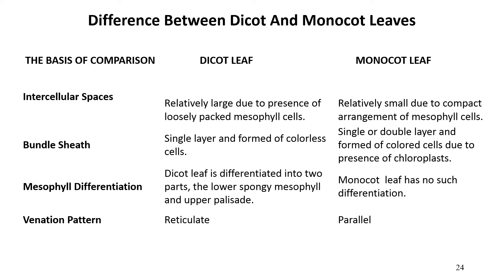The bundle sheath of dicot plant leaves generally has a single layer formed of colorless cells. The bundle sheath of monocot plants may have single or double layers and forms colored cells due to the presence of chloroplasts. The mesophyll of a dicot leaf is differentiated into two layers — the lower spongy mesophyll and the upper palisade — while monocot leaf mesophyll has no such differentiation. The venation pattern in dicot plants is reticulate (web-like), whereas in monocot plants it is parallel. Dicot leaves are broader and relatively smaller; monocot leaves are slender and long.